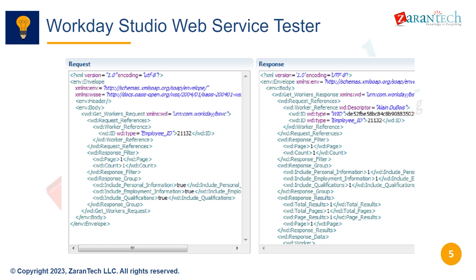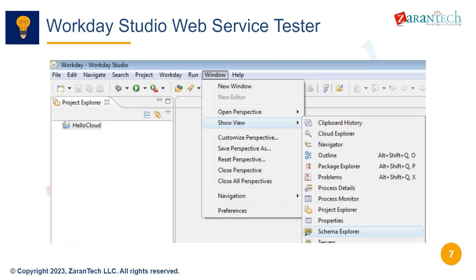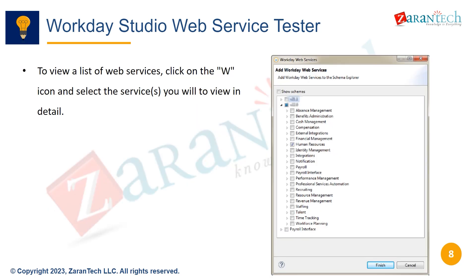Here's an example of the Schema Explorer in the Workday Studio perspective. It's located along the top right by default but can be rearranged. If you don't see it, you can open the Schema Explorer from the window menu. The screenshot shows the Workday functionality and the window to show view tab to navigate to the particular function.